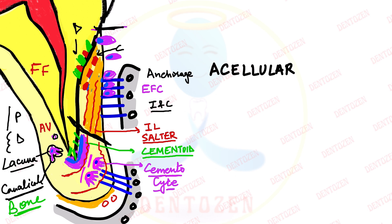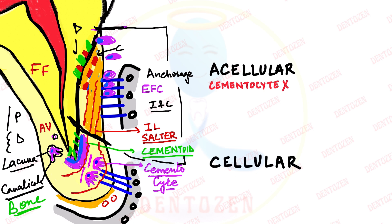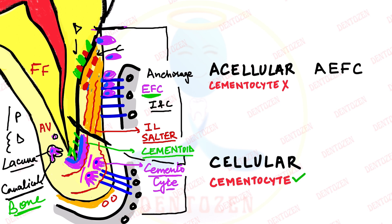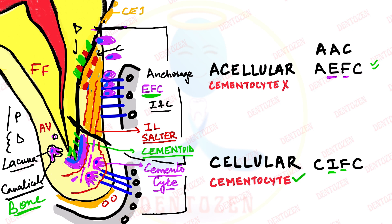With that we have covered the complete process of cementogenesis and the different types of cementum. The first type is acellular cementum, forming from the cervical margin to the apical two-thirds, with no cementocytes inside. The second is cellular cementum, seen in the apical third, where cementocytes are present. Based on fibers: acellular cementum has mainly extrinsic fibers from the PDL, so it is also called acellular extrinsic fiber cementum. Cellular cementum has mainly intrinsic fibers from cementoblasts, so it is called cellular intrinsic fiber cementum.